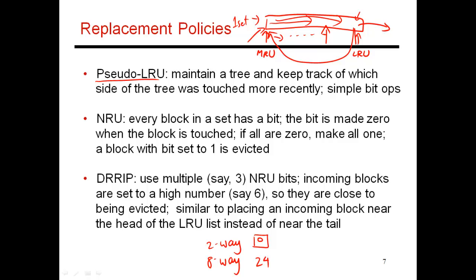Instead, processors use something like pseudo-LRU, maintaining a tree. You take all ways, split into two halves — ways 0 to 3 and ways 4 to 7 — and keep one bit indicating whether the right or left subtree was touched more recently. You continue partitioning recursively. To find the least recently used block, you navigate this tree. It's an approximation — you might not find the truly LRU block, but you find one not touched in the last few accesses. For an eight-way cache, only seven bits are needed, versus 24 for true LRU.